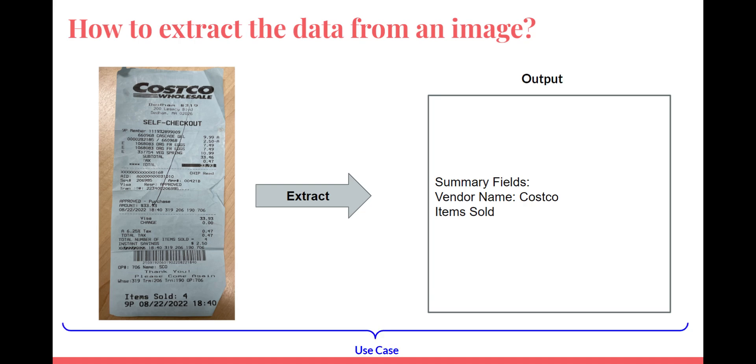In tech industry, this is typically called a use case, with a definite input, output, and a well-defined process. There are four steps in this process. First, we have to input the image, which is the grocery store bill from Costco. Step one is to place this in a folder.